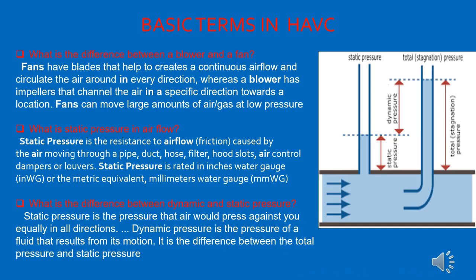There are a few common HVAC terms related to the AHU. What is the difference between a blower and a fan? A fan has blades that help increase continuous airflow and circulate air in every direction, whereas a blower has an impeller that channels the air in a specific direction towards a location. Static pressure is the resistance to airflow — the friction caused by air moving through the duct, pipe, hood, slots, air control dampers, louvers, etc. Static pressure is rated in inches water gauge.